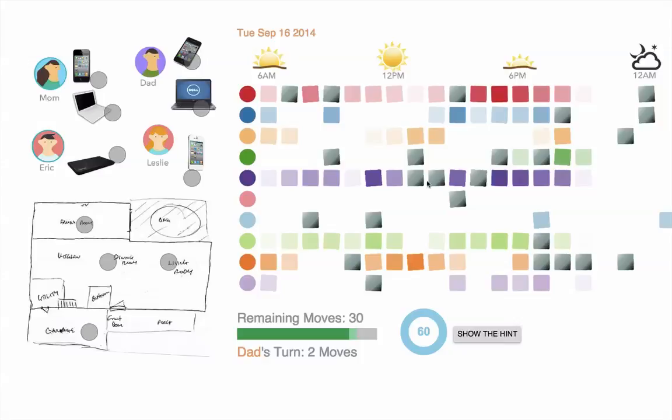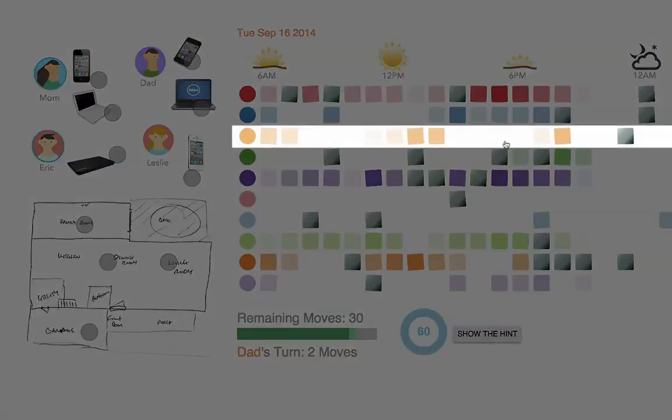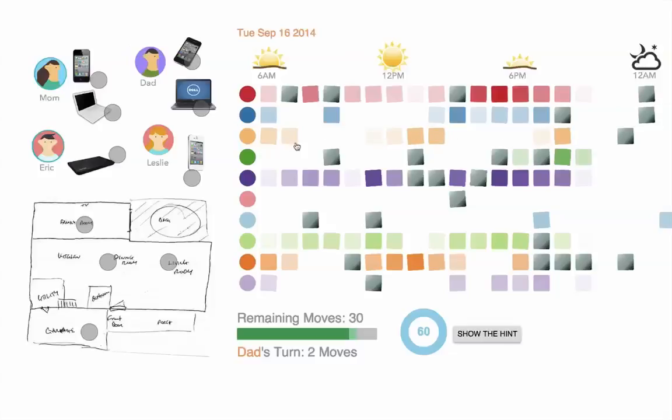For example, let's take a look at the row in light orange. If I remember correctly, it represents when the mom used her laptop that day. Let's see if I am correct.